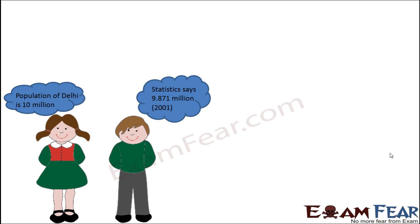This little girl sees that the population of Delhi is 10 million. Her friend asked her what the population of Delhi is, and she replied 10 million. But her friend disagrees, saying that the newspaper statistics show the population of Delhi is 9.871 million as of 2001. The girl thinks that 10 million is very close to 9.871 million — so who is right?